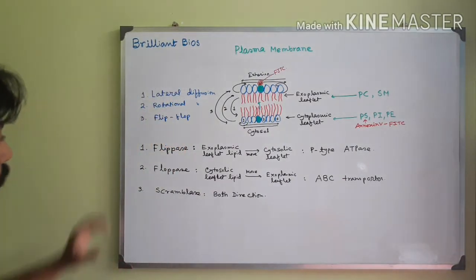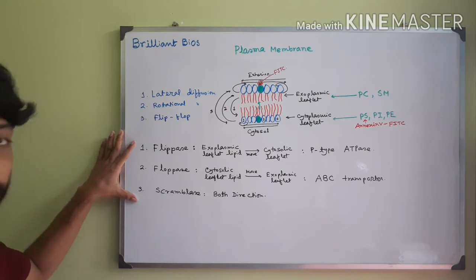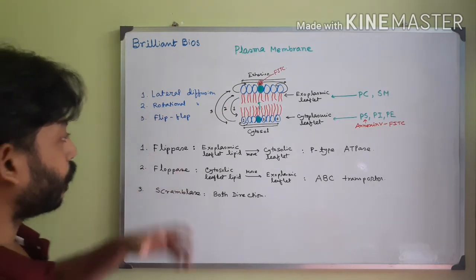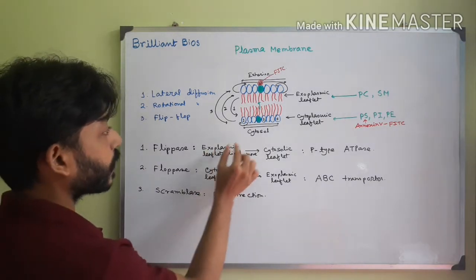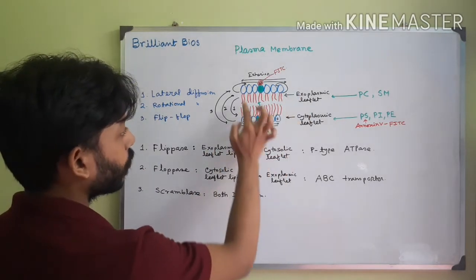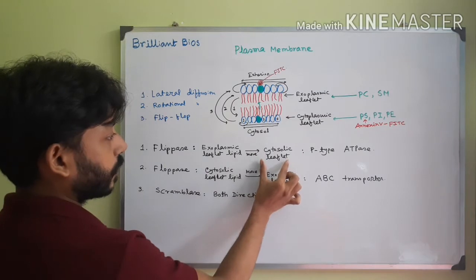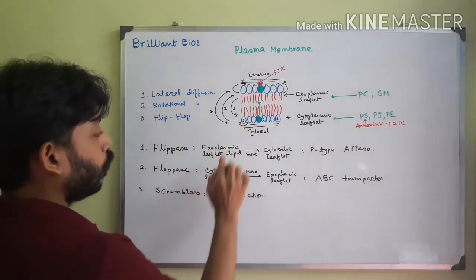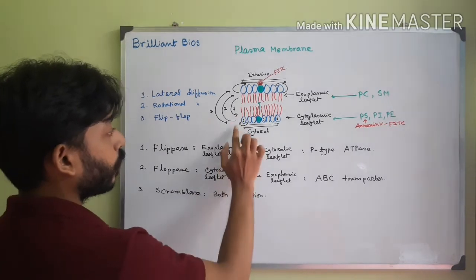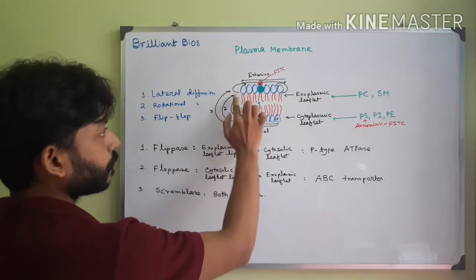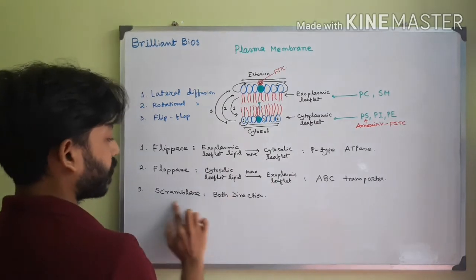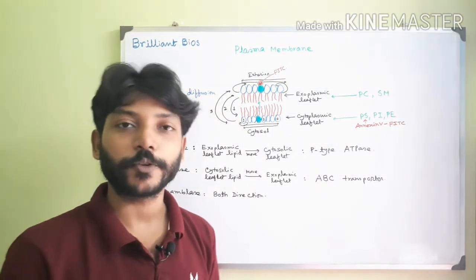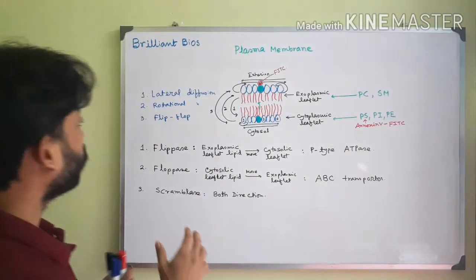To summarize these three enzymes in flip-flop movement: flippase helps move lipid from the exoplasmic leaflet to the cytosolic leaflet and is a P-type ATPase; floppase moves lipid molecules from the cytosolic leaflet to the exoplasmic leaflet; and scramblase helps move molecules in both directions.